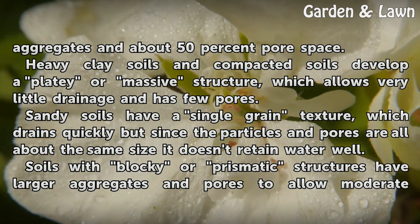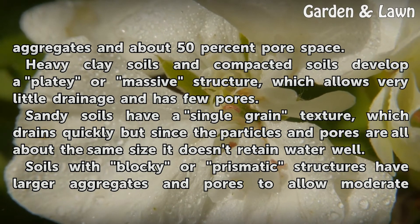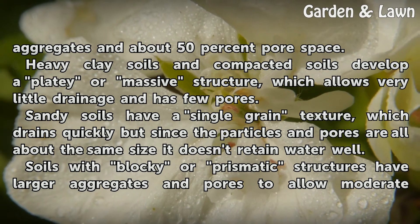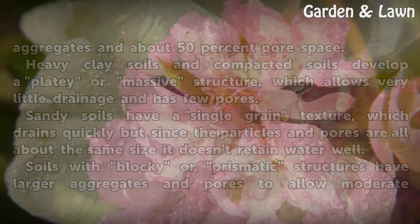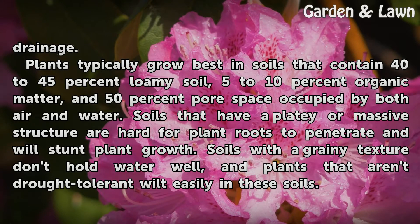Sandy soils have a single-grain texture, which drains quickly, but since the particles and pores are all about the same size, it doesn't retain water well. Soils with blocky or prismatic structures have larger aggregates and pores to allow moderate drainage. Plants typically grow best in soils that contain 40 to 45 percent loamy soil, 5 to 10 percent organic matter, and 50 percent pore space occupied by both air and water. Soils with a platy or massive structure are hard for plant roots to penetrate and will stunt plant growth.